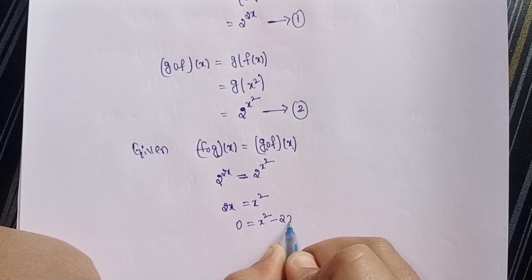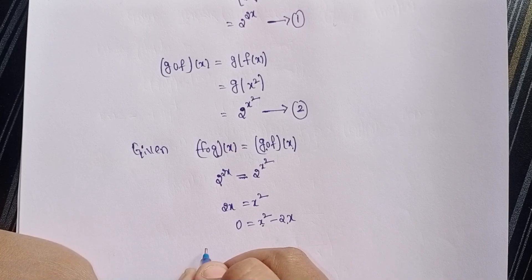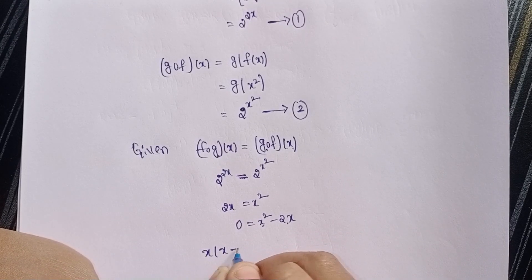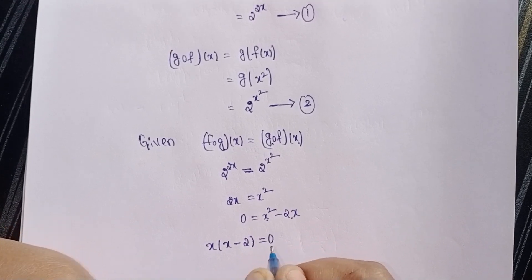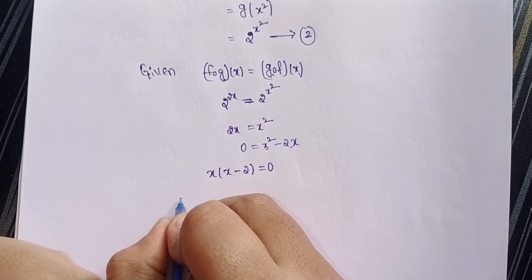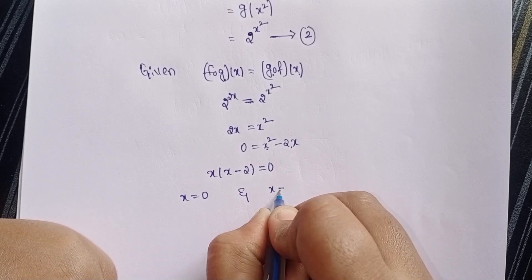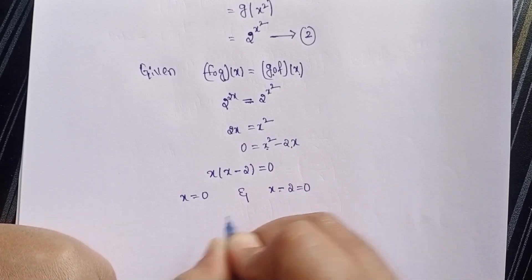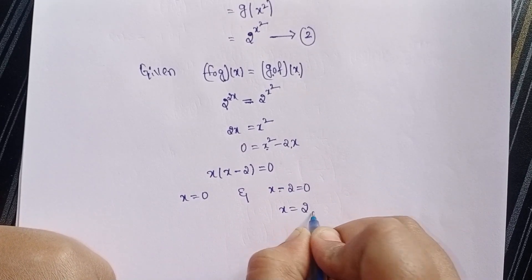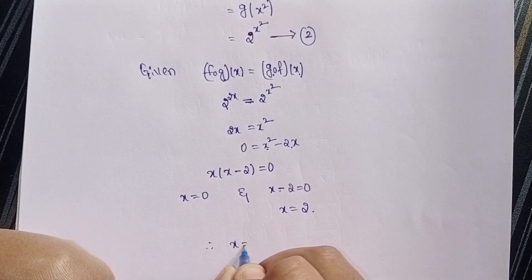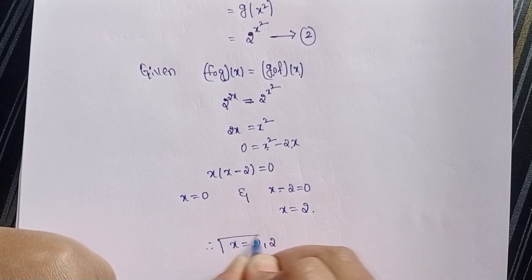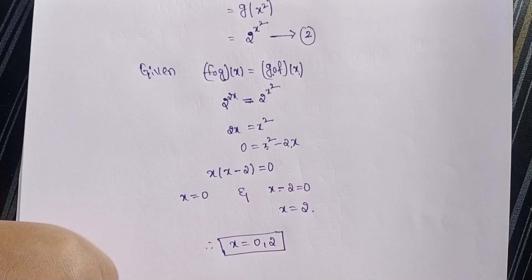Factoring: x times x minus 2 equals 0. So x equals 0 and x minus 2 equals 0, giving x equals 2. Therefore the x values are 0 and 2. This solves the equation and the problem.